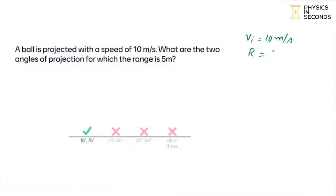What do we do? We will calculate this data according to the angle. Range formula is Vi² sin 2θ divided by g. Here we will calculate sin 2θ. R into g over Vi².